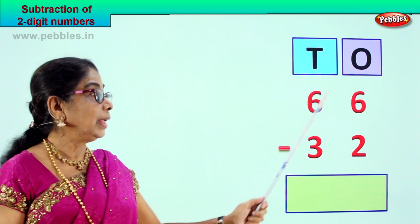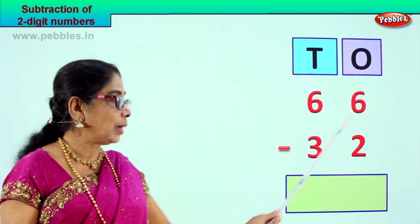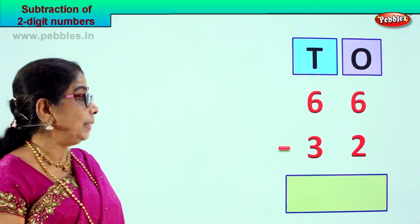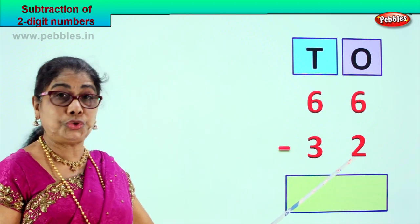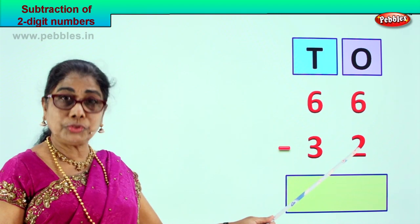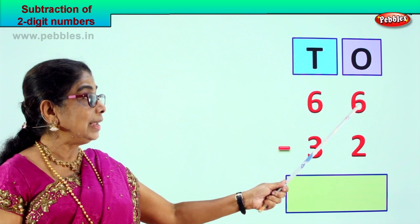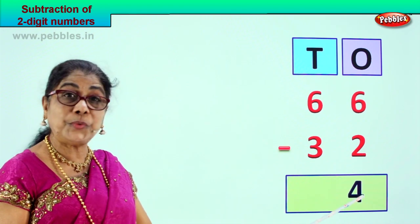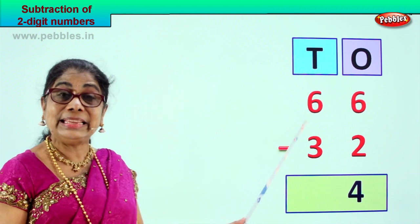66 minus 32. Six tens, six ones, minus three tens, two ones. Let's do it together. Subtraction means take away. Let's do the ones first — six minus two. Six take away two: you count up to six — two, three, four, five, six — that is four. Six minus two, you get four.